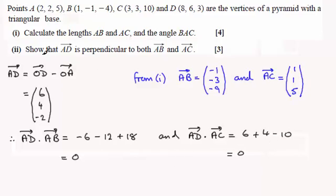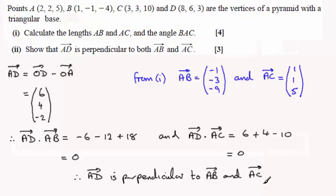So just to summarize, it says show that they're perpendicular. So if we just put therefore AD is perpendicular—otherwise just leaving it without this ending in my opinion doesn't show that you've really understood the idea—but it's perpendicular to the vector AB and the vector AC.